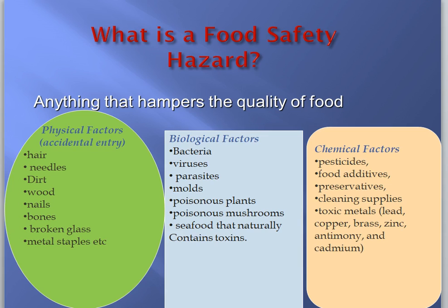There are certain food additives which are not permitted at higher levels. Monosodium glutamate, or Chinese salt, is a food additive that is okay at a particular level, but beyond that level it is considered a chemical hazard. Preservatives also have a permitted level - beyond that they become a chemical hazard. Cleaning supplies like detergents could also infiltrate into food. Toxic metals like lead, copper, brass, zinc, antimony, and cadmium can also enter food.